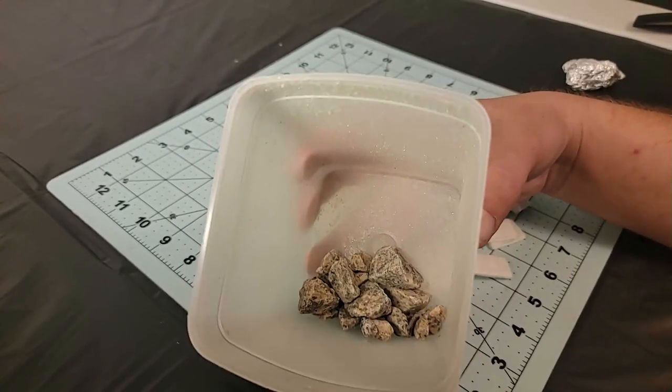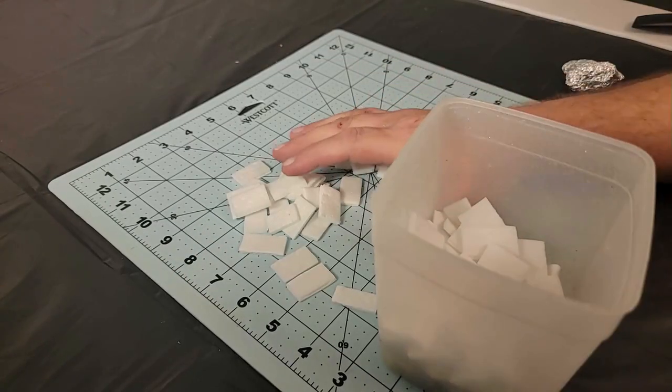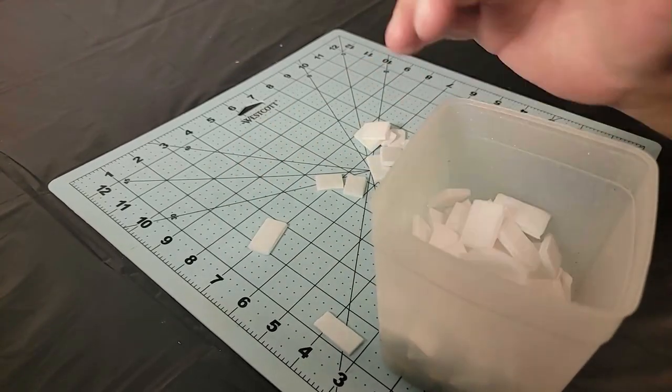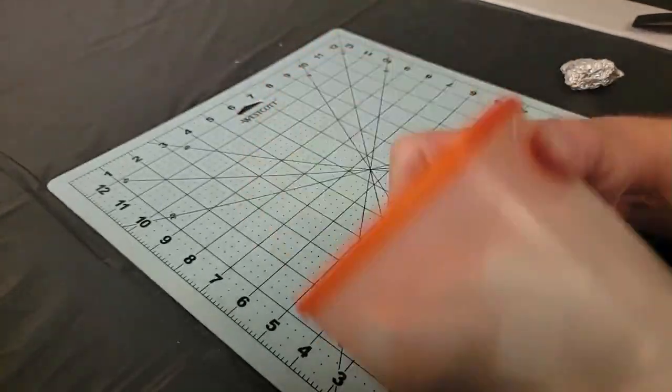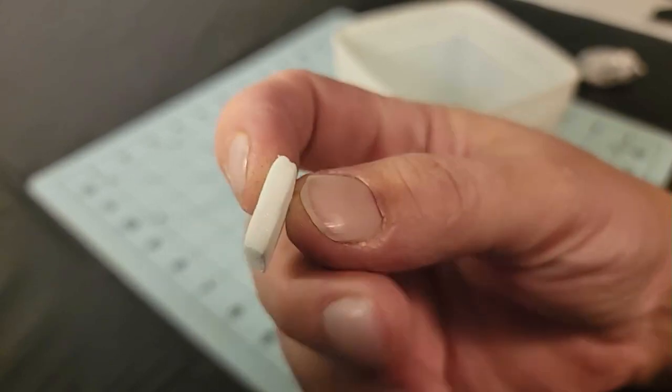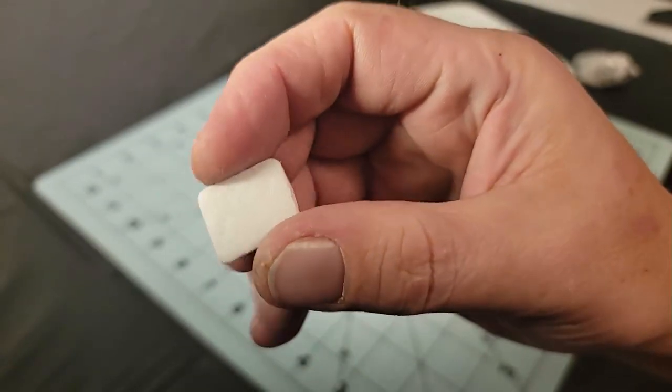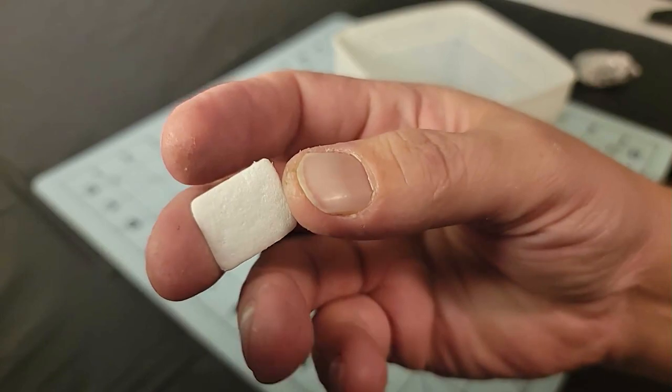Once they were all cut I grabbed a Tupperware container that I put some rocks in, put all the pieces into the container and gave it a good shake for about a minute or two. What I get in the end are smoother edges and some extra texture added to make them look more like stones.